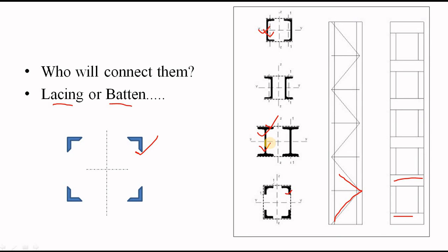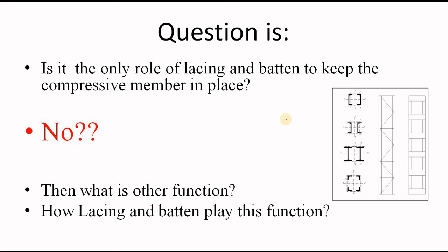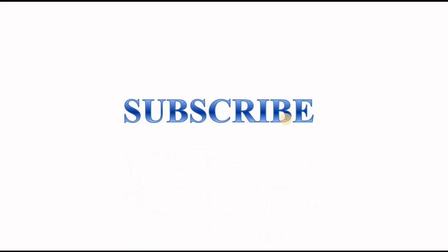So, is it the only role of lacing and batten to keep the compressive member in place? No? Then what is the other function? Yes, you know that they carry the shear or shear and moment. But how this shear or moment come? And how lacing or batten successfully carry them? Well, in the next video, we will get the answer. Till then, think about it. If you want more videos like this, please don't forget to subscribe if you have not done yet.